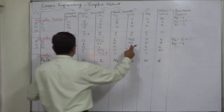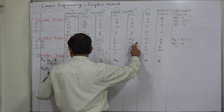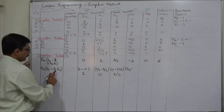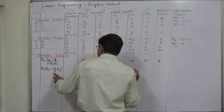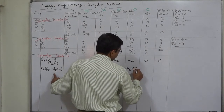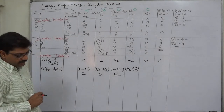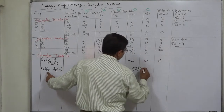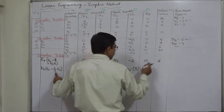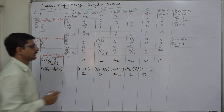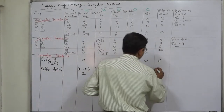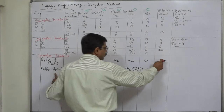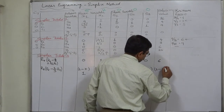Continuing R8: R5 here is 1/3 minus 1/3 into minus 2. One third into minus 2 is minus 2/3, so ultimately it is 1/3 + 2/3 = 1. R5 here is 0 minus 1/3 into R7, which is 0 again, so 0 as it is. R5 here is 3 minus 1/3 into R7; 1/3 of 6 is 2, so it comes to 3 − 2 = 1.